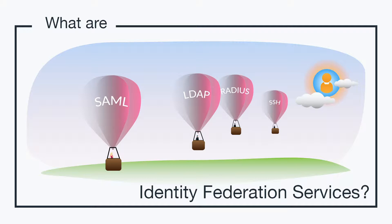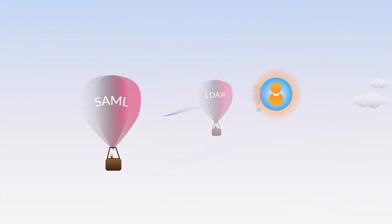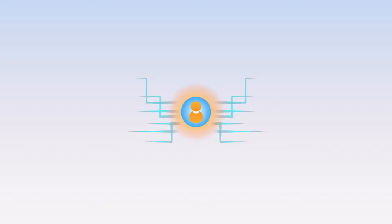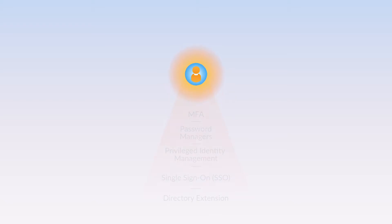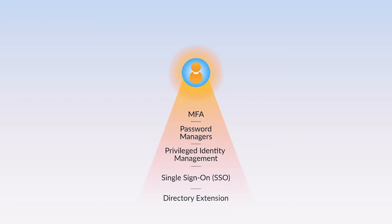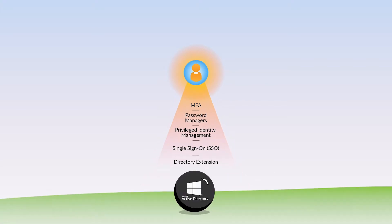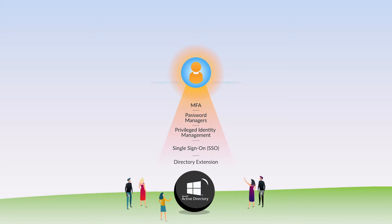So, what are Identity Federation Services? Identity Federation Services refer to a category of identity management solution that is focused on extending user identities to a variety of IT resources. Some of the most popular examples include web application single sign-on, privileged identity management, directory extensions, and more. Identity Federation Services are generally layered on top of a legacy identity management solution to extend traditional user identities to unsupported IT resources.